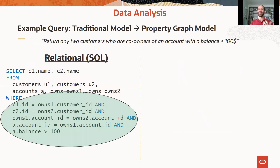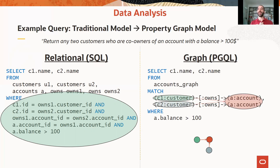Without going into all the details of the code, just to give you an idea of how much more complicated the traditional model is versus the graph model: looking at the SQL code, you can see complex joins are required to bring and glue the data together. In contrast, with a graph query language — in this case PGQL — you can very intuitively and visually ask for the data you want. Here we have customer C1 as the owner of account A, and customer C2 is also the owner of the same account A, so things become simpler and intuitive.